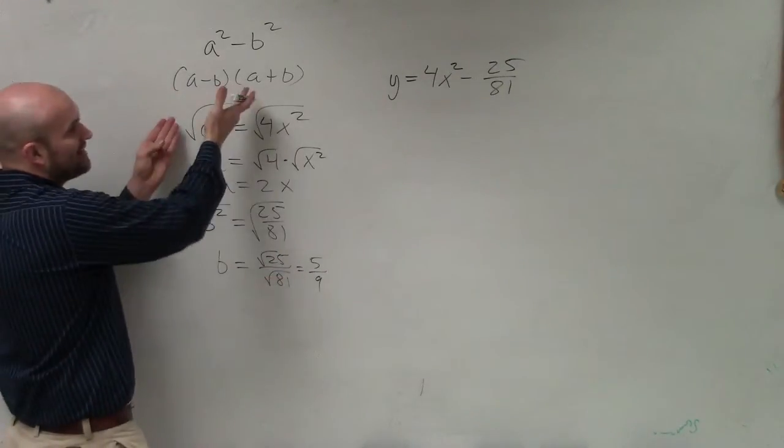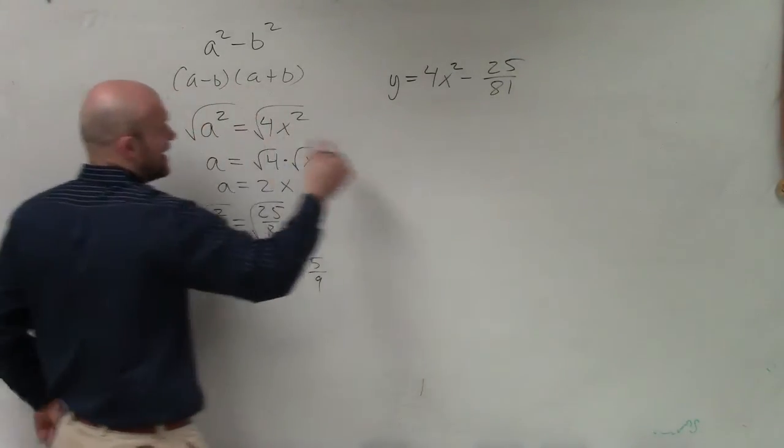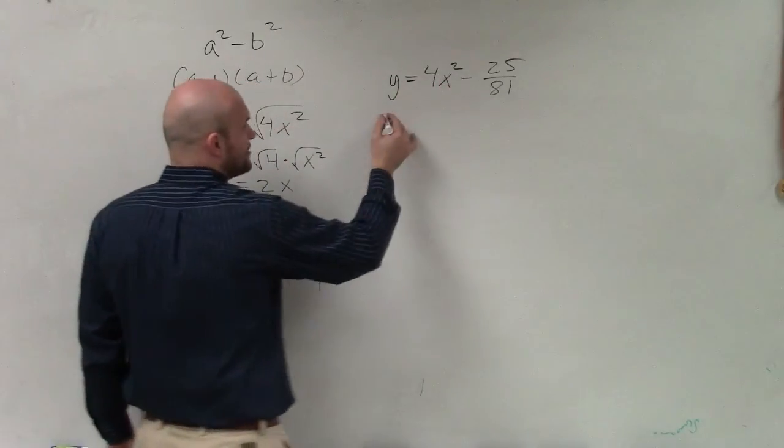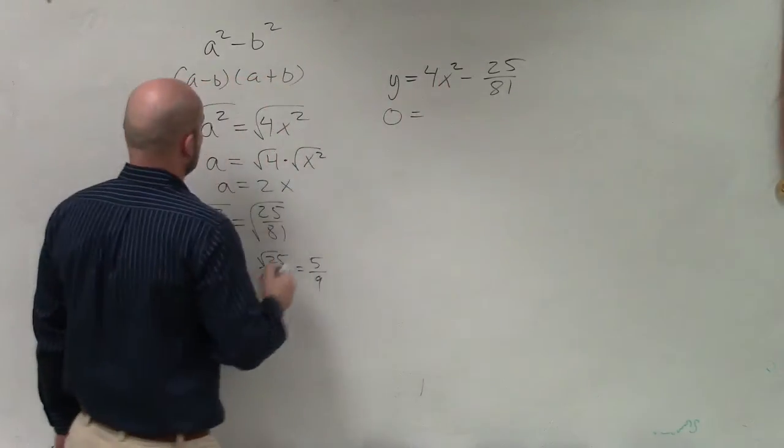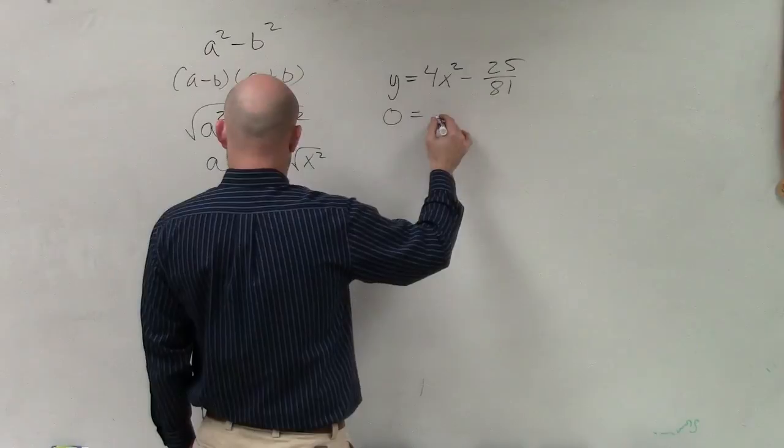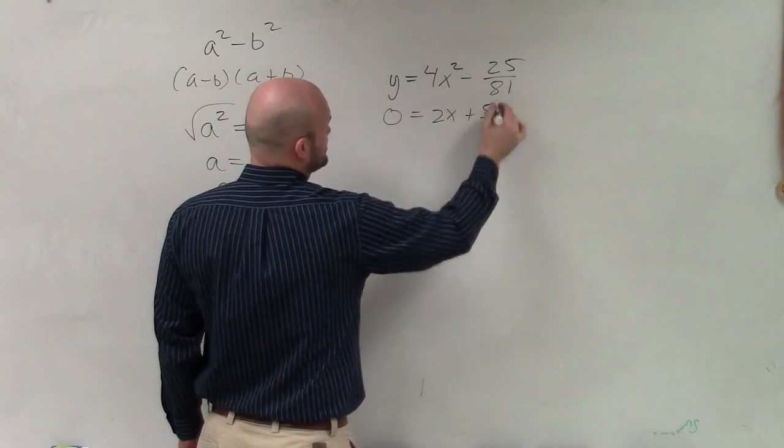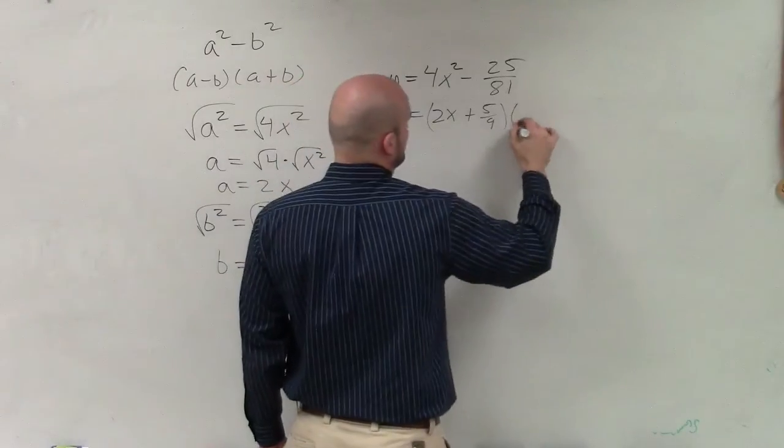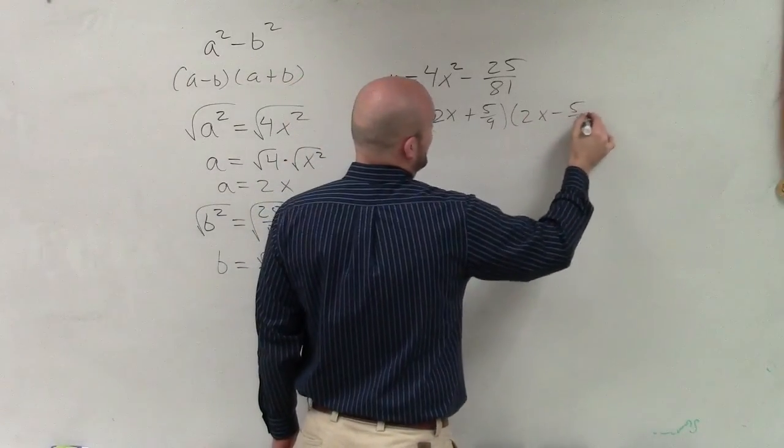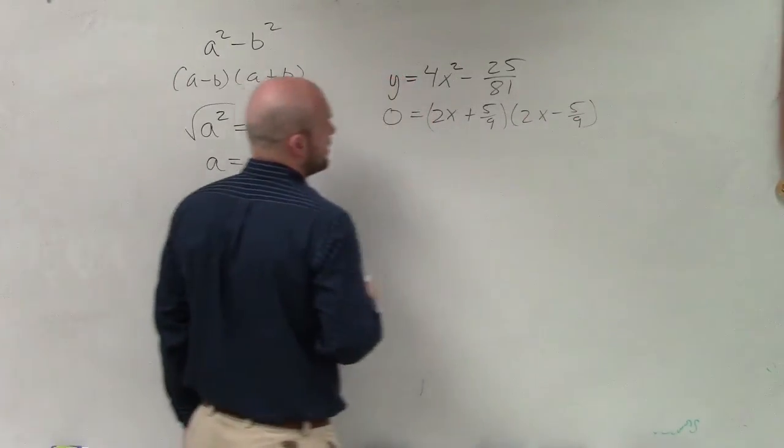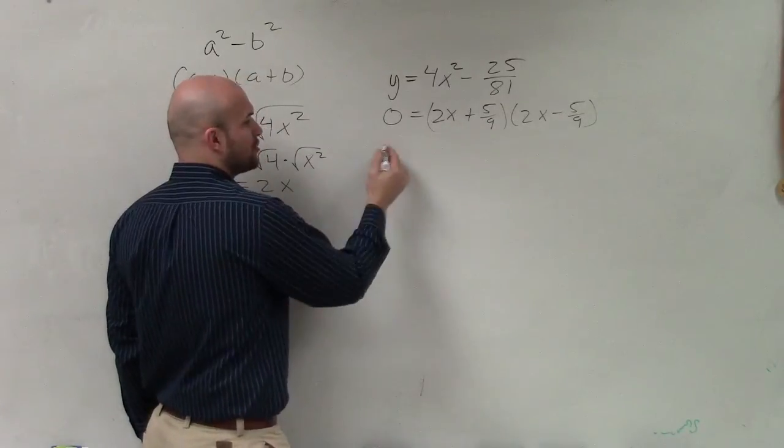Now I just rewrite that into that formula, and then I have it set. Since I'm solving by factoring, I'm going to set this equal to 0. So therefore, I have a, which is 2x, plus 5 over 9, which is my b. And then 2x minus 5 over 9, which is my b as well.